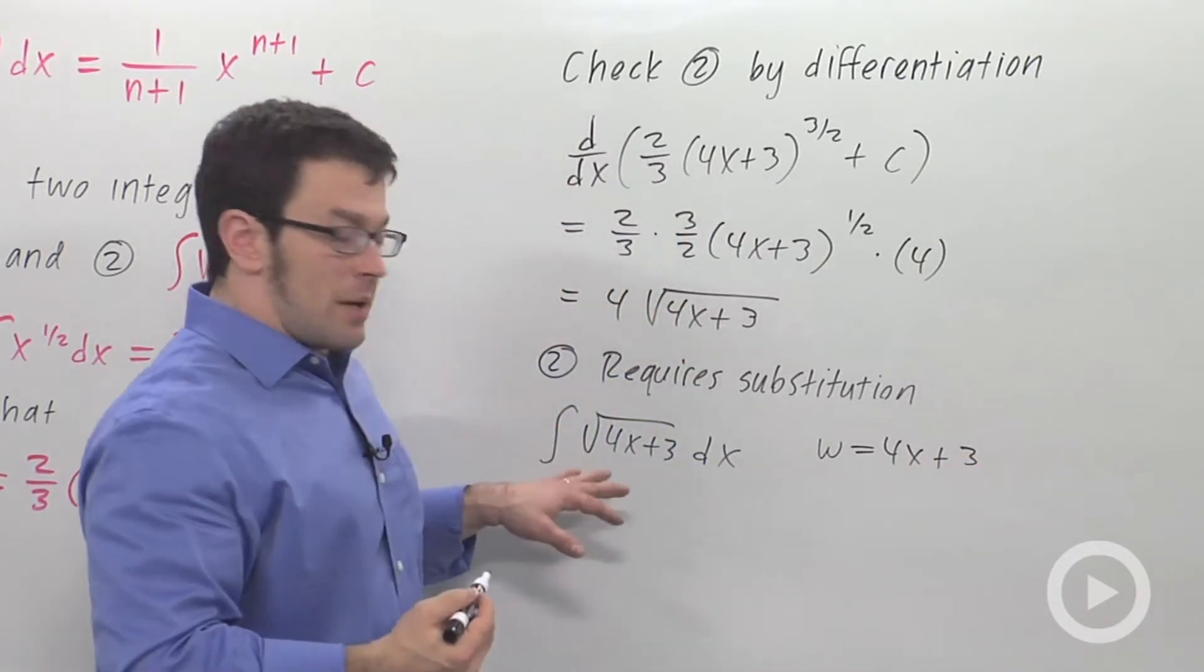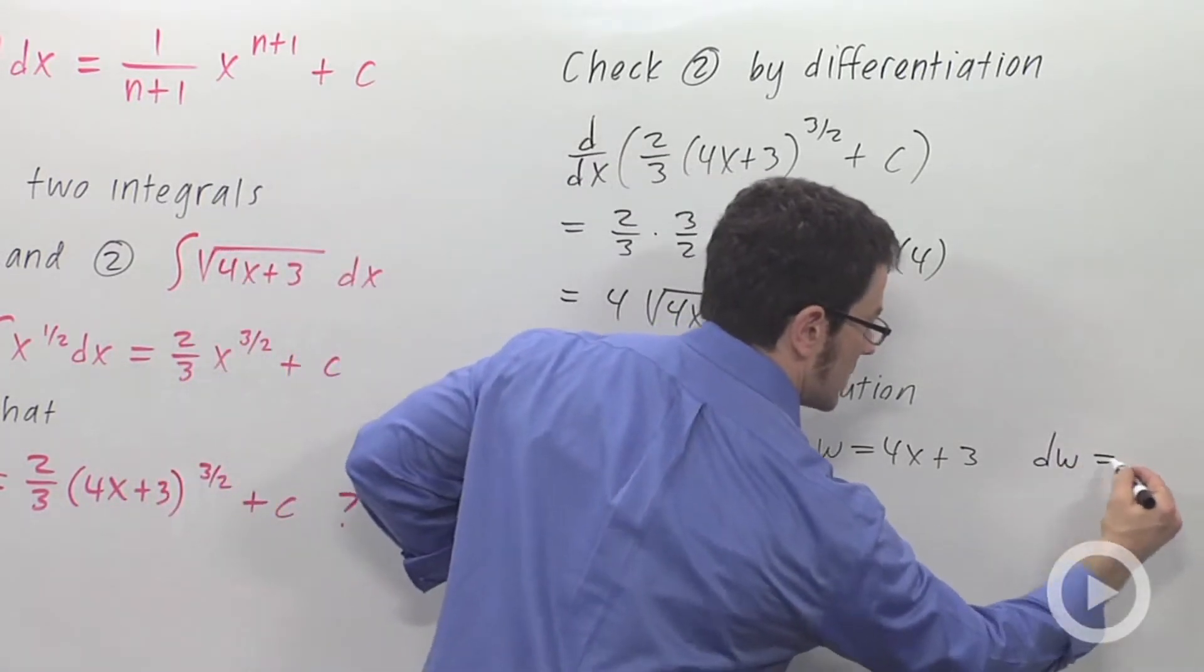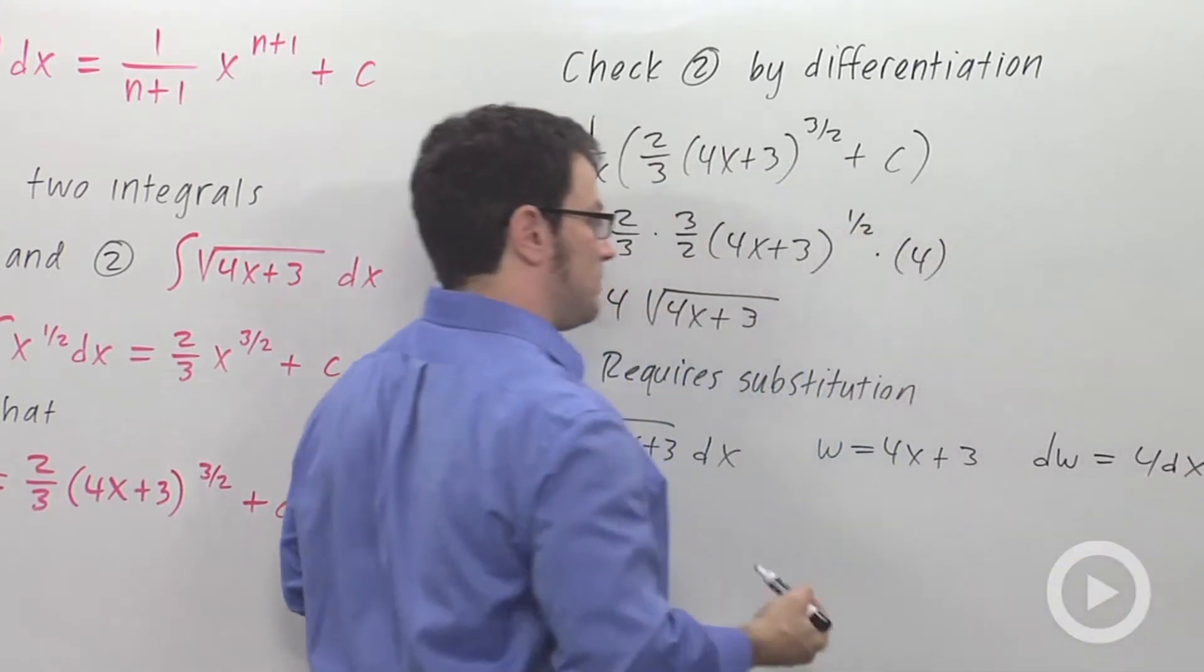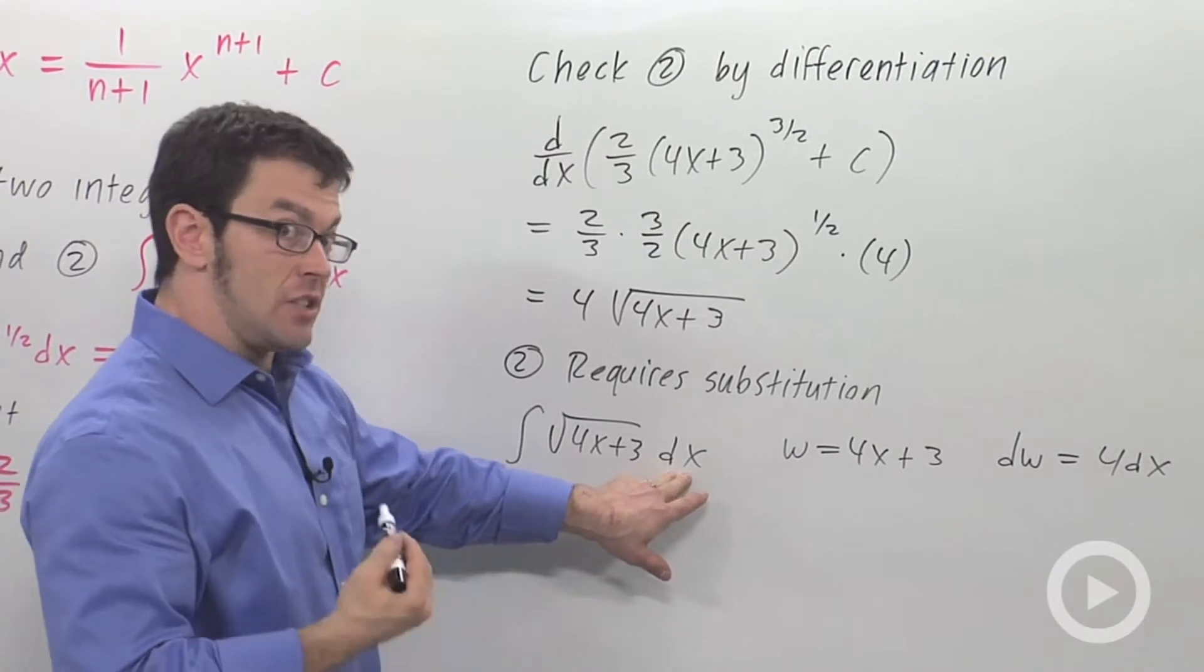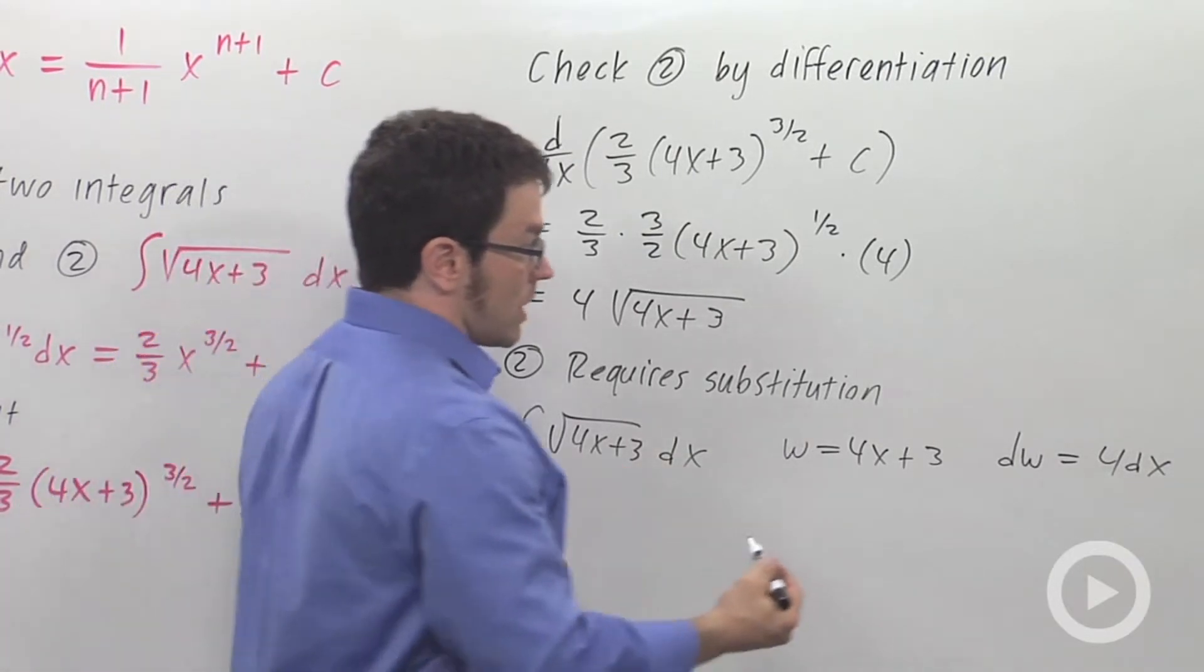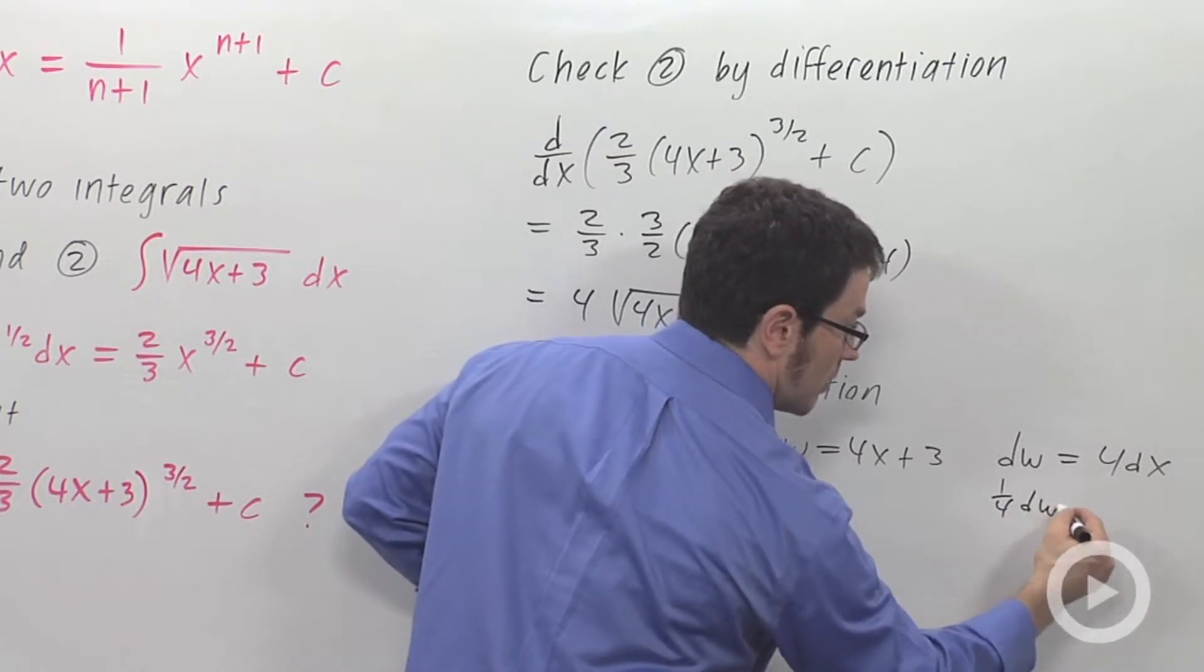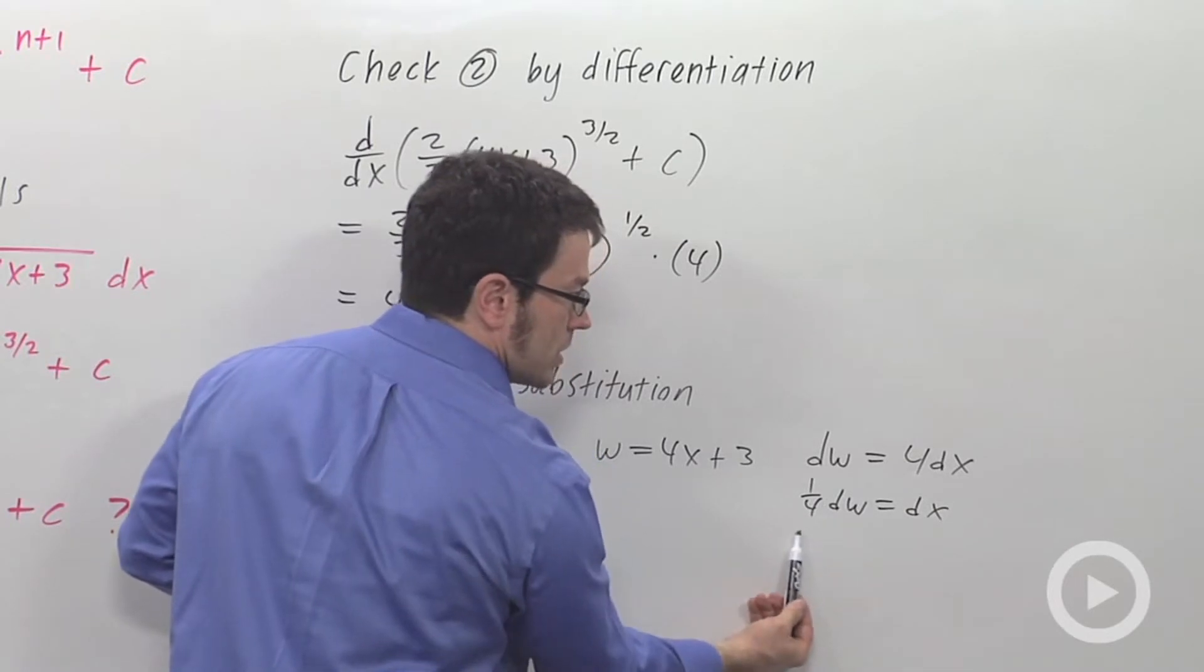And I want to calculate dw, so dw is going to be 4 times dx. Now I have dx, I don't have 4 times dx, so what I need to do is multiply both sides by 1 quarter. So 1 quarter dw is going to equal dx. And this is what I'm going to replace my dx with, 1 quarter dw.